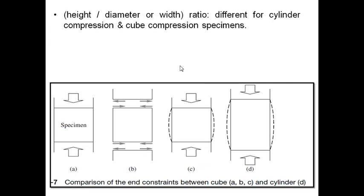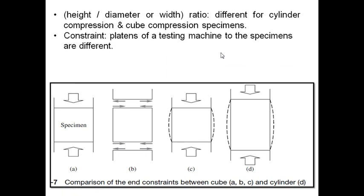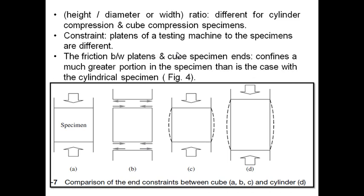Height by diameter or width ratio is different for cylinder compression and cube compression specimens. Constraints, that is platens of a testing machine to the specimens, are also different. The friction between the end platens and cube specimen ends confines a much greater portion in the specimen than is the case with the cylindrical specimen, as shown in figure 4.